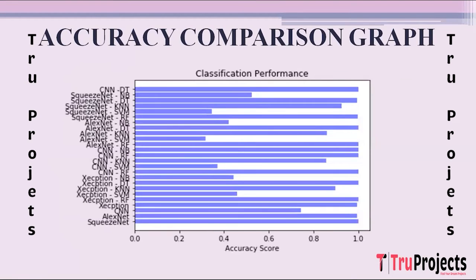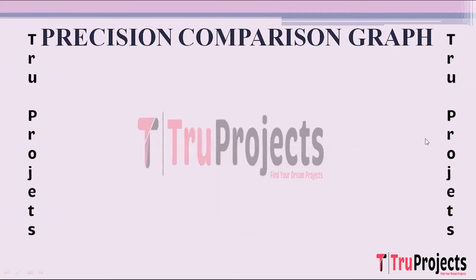This is the horizontal bar graph comparing accuracies of different algorithms. In this graph, the x-axis shows accuracy score and the y-axis shows algorithm names. Accuracy measures the overall correctness of predictions, showing the percentage of correctly classified instances.